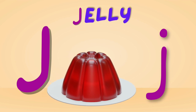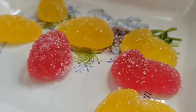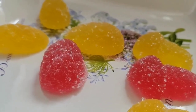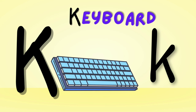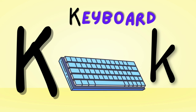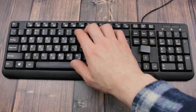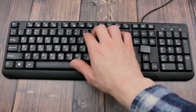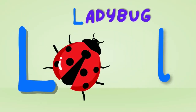J is for Jolly. Jolly, jolly — this is the jolly. K is for Keyboard. Keyboard, keyboard — this is the keyboard.